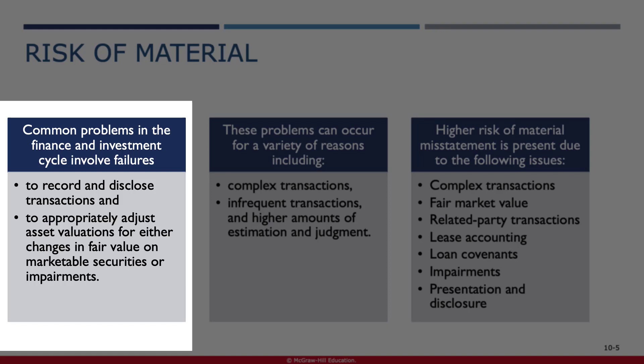Accounting and reporting failures related to the investment and financing cycle can have significant consequences for financial reporting accuracy and transparency. Some common failures include inaccurate valuation of investments, especially when using complex financial instruments or models, which can lead to misstatements in financial statements. Overstating or understating the value of investments can distort the financial position and performance of the entity. Also, inadequate disclosures — failing to provide sufficient information about the nature and risk of investments or financing arrangements — can lead to a lack of transparency, impairing stakeholders' ability to assess the entity's financial health and risk exposure.